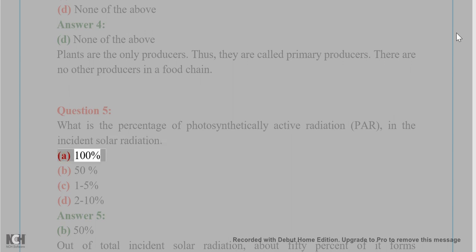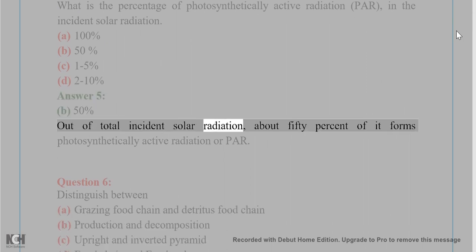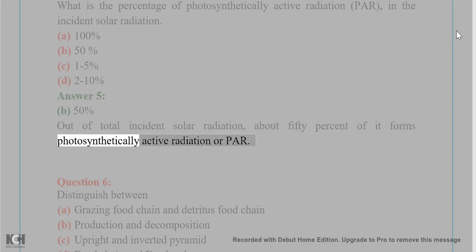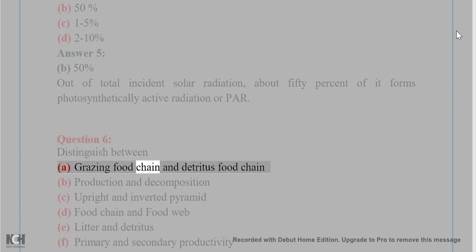Question 5: What is the percentage of photosynthetically active radiation (PAR) in the incident solar radiation? (A) 100%, (B) 50%, (C) 1 to 5%, (D) 2 to 10%. Answer 5: (B) 50%. Out of total incident solar radiation, about 50% of it forms photosynthetically active radiation or PAR.